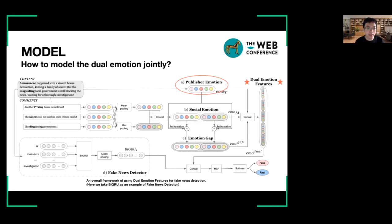To obtain social emotion, firstly, we need to extract the emotion features from every comment. Next, we can get their average emotional signals by mean pooling, and get their extreme emotional signals by max pooling. Finally, we can cut the two as social emotion. To model the resonances and the dissonances of dual emotion, we propose emotion gap. It is designed as a subtraction between publisher emotion and social emotion. By this means, it can mirror the differences between the dual emotion.